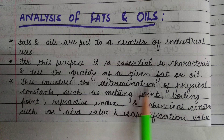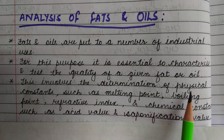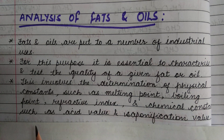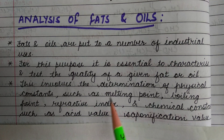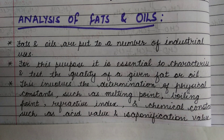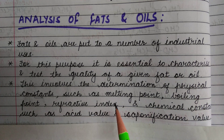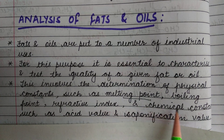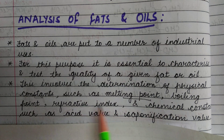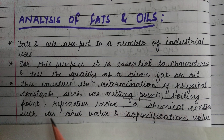This involves the determination of physical constants such as melting point, boiling point, and refractive index, and chemical constants such as acid value and saponification value. To check the quality of a given fat or oil, we need to know these physical constants — melting point, boiling point, refractive index — and some chemical constants which we are going to study now.